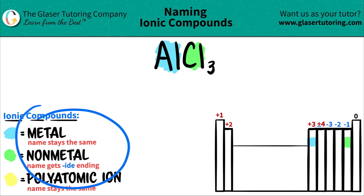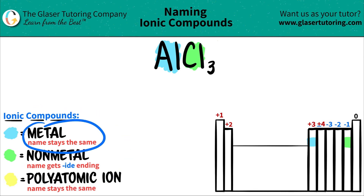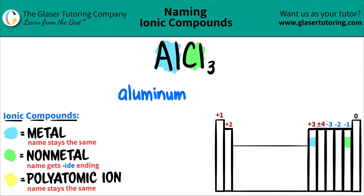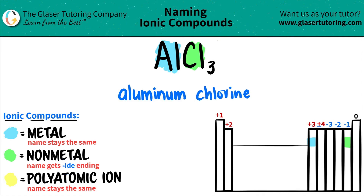Now we're just going to name it. Aluminum comes first — the metal comes first — and the metal name always stays exactly the same. So aluminum will just stay aluminum. Next comes chlorine. Chlorine is the non-metal, and that name always gets the -ide ending. So it was chlorine on the periodic table, but I need that -ide ending, so it would be chloride. You drop the N-E because I already have the I there, and you just say D-E, and there's the -ide ending.